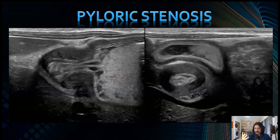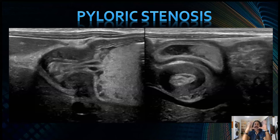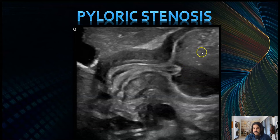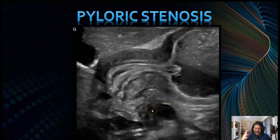Treatment for pyloric stenosis is pyloromyotomy — a small incision in the epigastric region where they cut into the muscle to allow it to expand, and over time the body creates a new serosal surface over that. Here's another case: antral nipple sign, fluid and dense material in the stomach, very thickened muscle. You measure from here to here for length. Some superior mesenteric vein or portosplenic confluence and a little gallbladder are visible as landmarks.